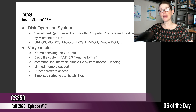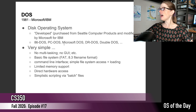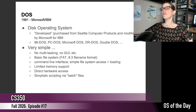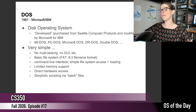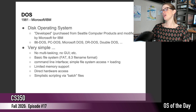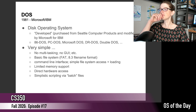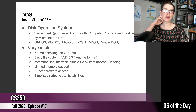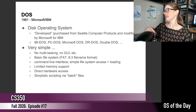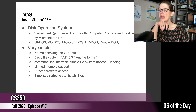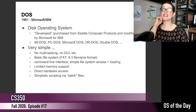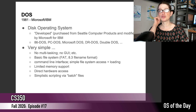IBM needed an operating system to be released with this computer. My understanding is that IBM was working on their own operating system called CPM, but unfortunately it wasn't ready in time for the launch. So IBM had to go out and find somebody else to acquire an operating system. They approached Microsoft, and Microsoft approached a company called Seattle Computer Products and purchased DOS from them, then made some modifications to create DOS.